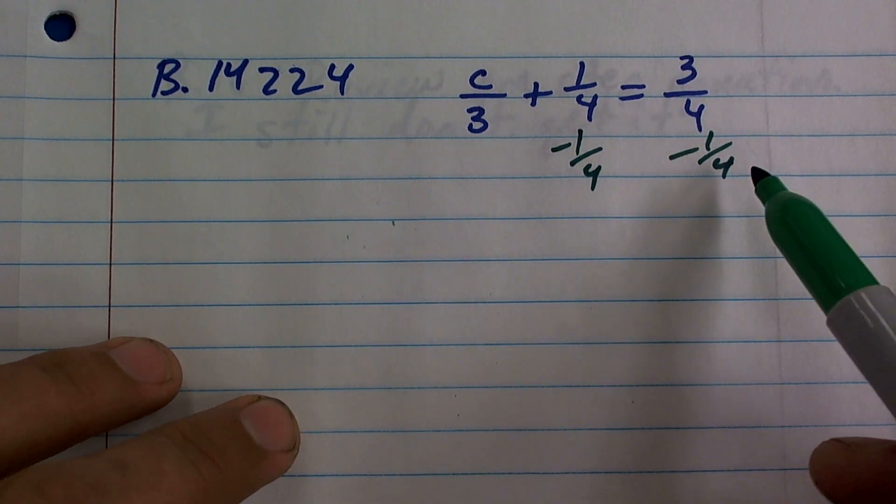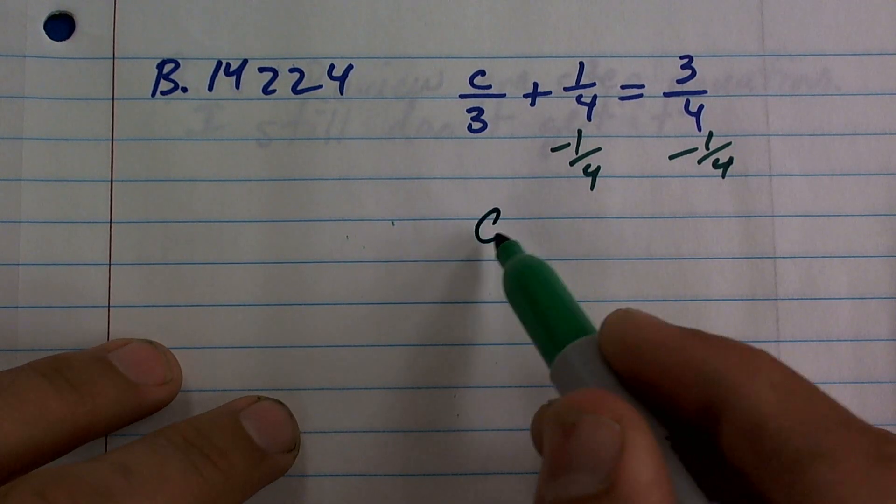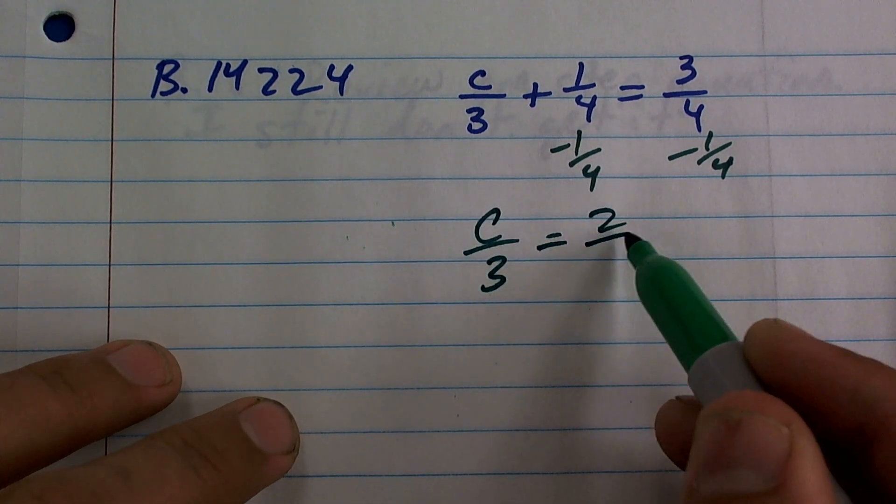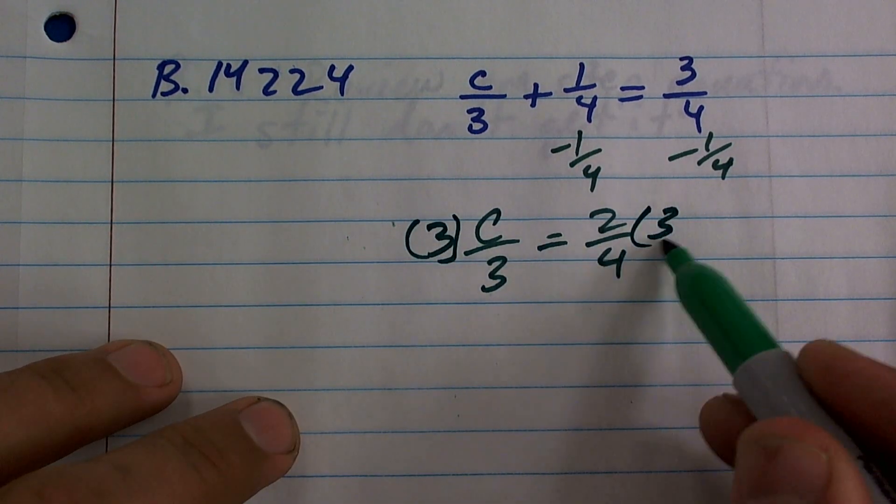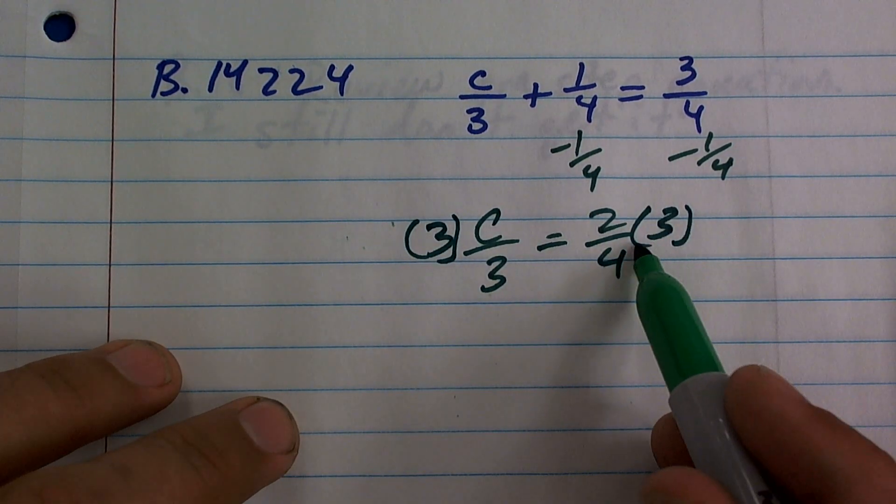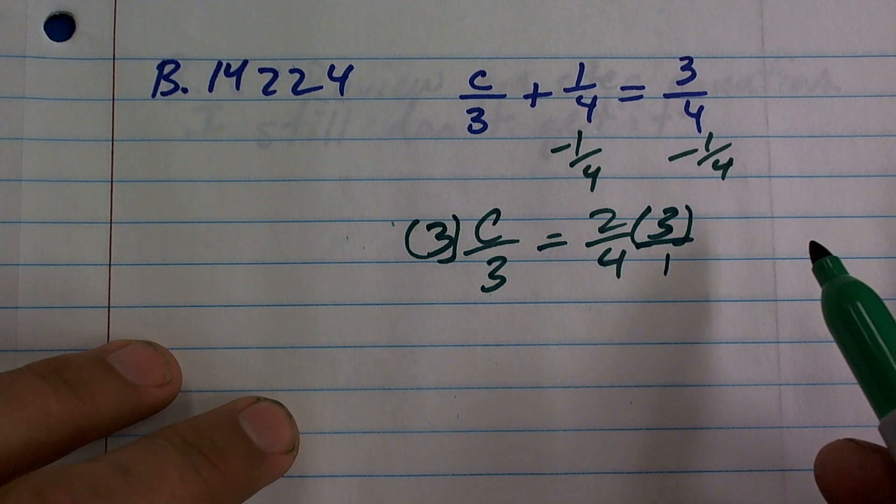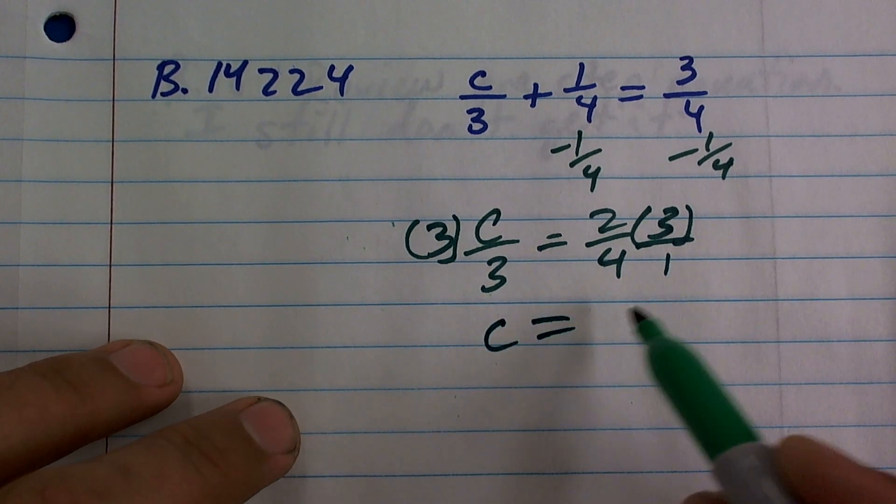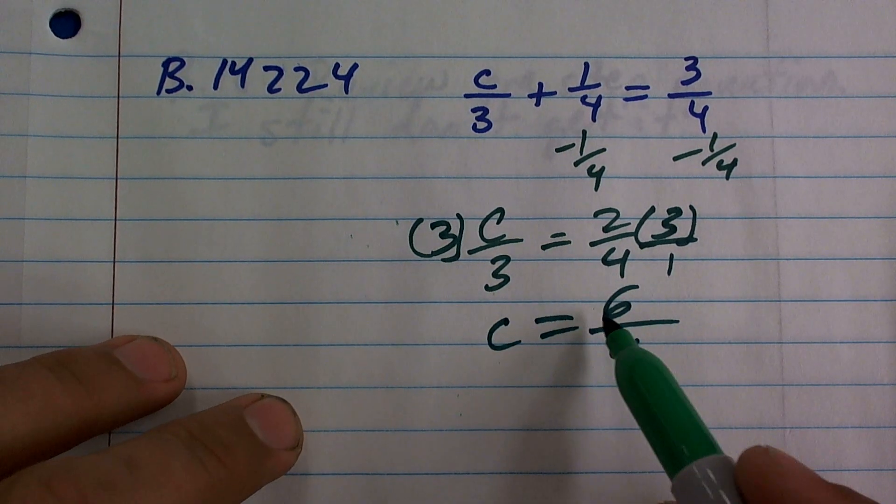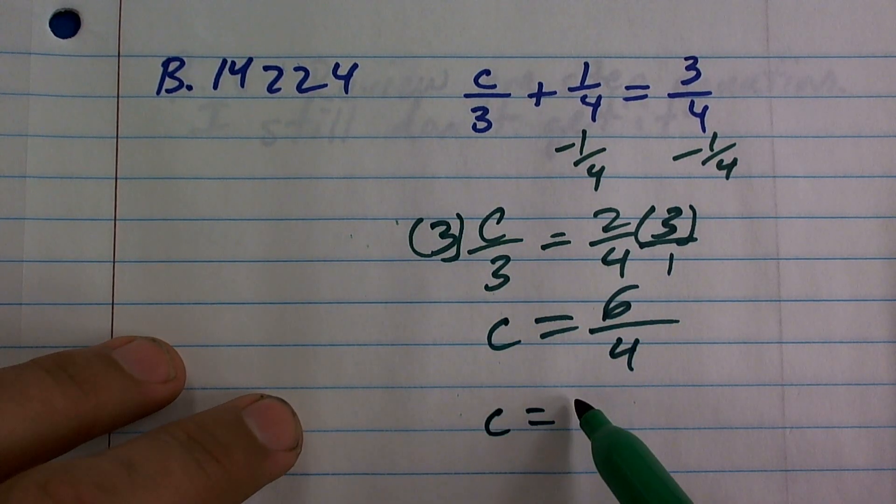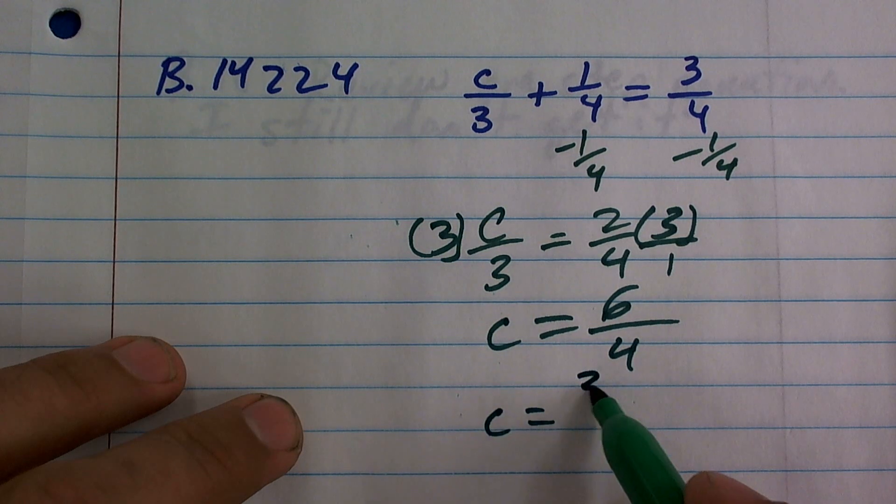3 fourths minus 1 fourth is 2 fourths. So, c over 3 equals 2 fourths. Now, to undo division, I need to multiply by 3 on both sides. Remember, 3 can be represented as 3 over 1. When you multiply fractions, you get 2 times 3, which is 6. 4 times 1 is 4. C equals 6 fourths, which can be reduced to 3 over 2.